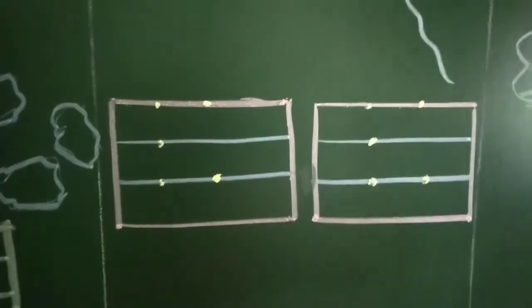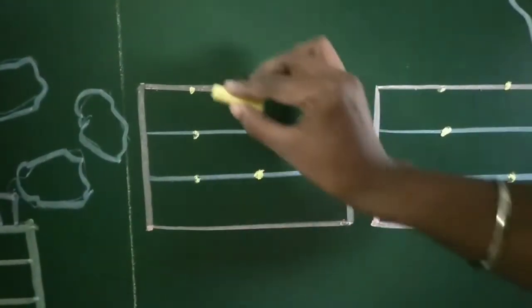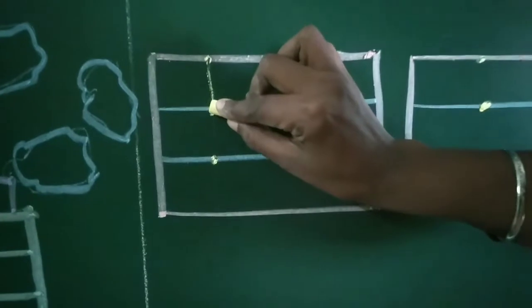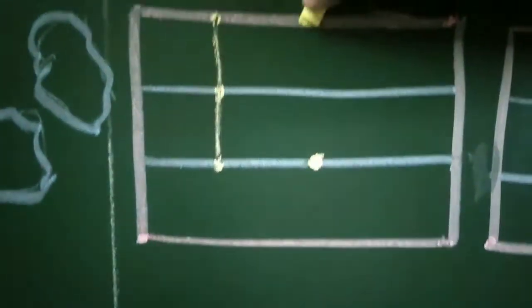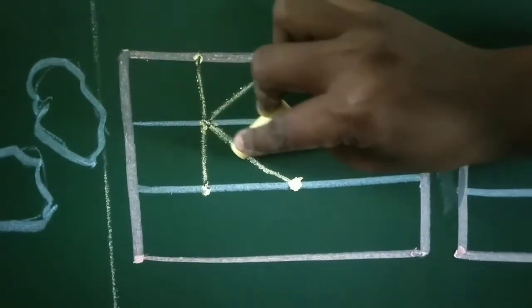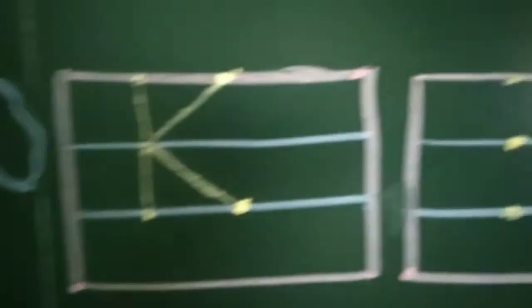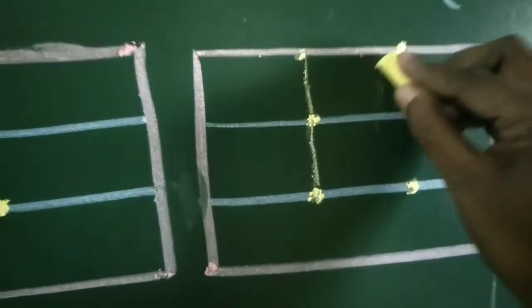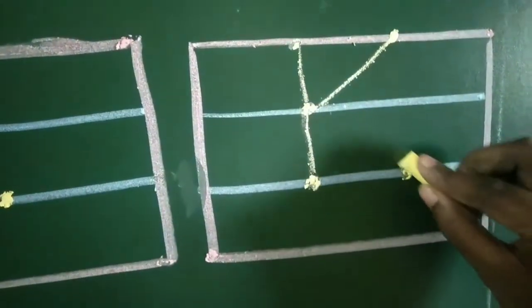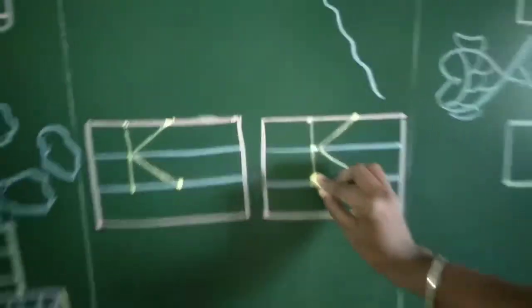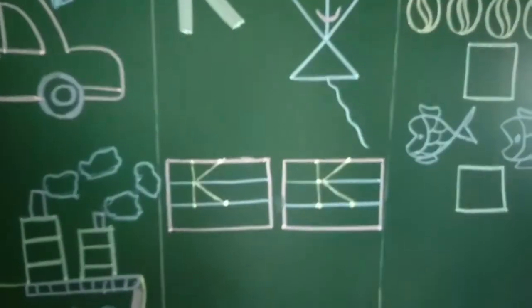Now we will see how to write K for kite with the help of the dots. See — standing line, then slanting line, slanting line. This is K for kite. Once again: red to blue standing line, then red to blue slanting line, blue to blue slanting line. In this way we have to write K for kite.